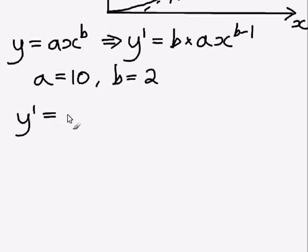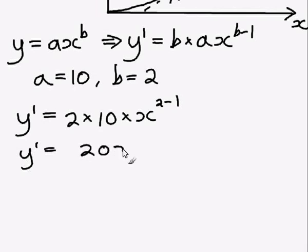So y dash equals b, which is 2, times a, which is 10, times x, and we reduce our power of x by 1. So it's going to equal 20x to the power 1. Now anything to the power 1 is just the same thing again, so 20x is our answer.